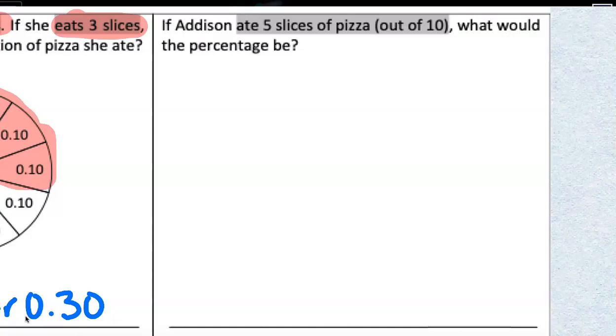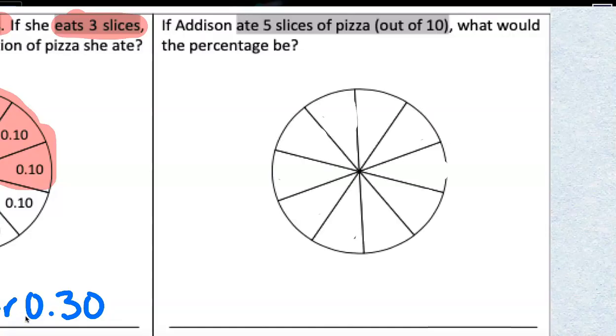Let's try the next question. If Addison ate five slices of pizza out of ten, what would the percentage be? So, how many pieces would that pizza be broken into? Yes, it would be broken into ten pieces. And if we're talking about percent, remember, percent means out of 100. So, each of those represents 10%, and if I have 10 parts out of 100, 100 divided by 10 is 10. So, each of those are worth 10%.